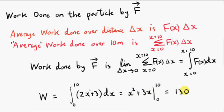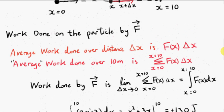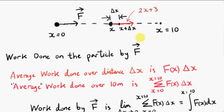That gives us 130 joules. And the work done by this force is positive because you can see that this force has a component in the direction of motion. So this force f contributes 130 joules of energy to the particle's motion.